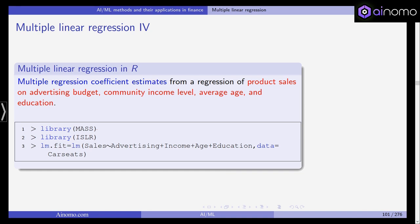Then we use the LM function, which is the linear model in R. This is the short command for linear regression analysis in R. The syntax is as follows: sales is explained and predicted by using advertising plus income plus age plus education. We are using the car seats data, fitting a linear model, and this is now written into our new variable LM.fit. LM.fit is the object that includes the fitted linear model object.